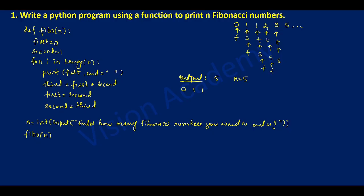Control transfers to the for loop again, incrementing i to three, which is less than four. It prints first — first value is two, so it prints two. Third equals first plus second: two plus three equals five, so five becomes third. First is set equal to second, and third becomes the new second. Control transfers to the for loop incrementing i to four, which equals four — the condition is still true.